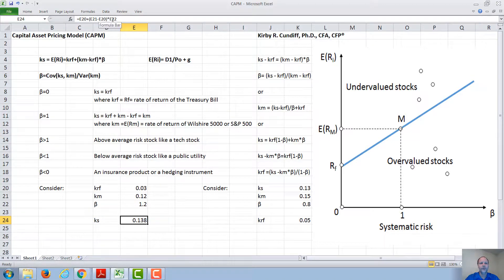Under those circumstances, you end up from the equation with a rate of return of your security of 13.8%. Since it is an above risk security, you would expect it to have a return greater than the market, which it does.